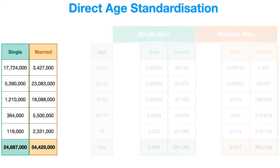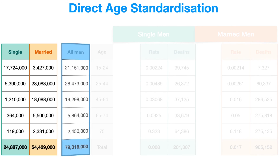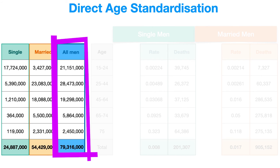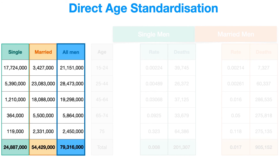In direct age standardization, we say: let's imagine that both groups have got exactly the same age structure. We take out the age structure we've got and pop in a standard age structure — by doing that, we're controlling for age. Age structure can't possibly influence the comparison because both groups will have the same age structure. In this case, we simply add up the two groups — single men and married men together make up all men in the population — and that becomes our standard population, whose age structure we'll use.